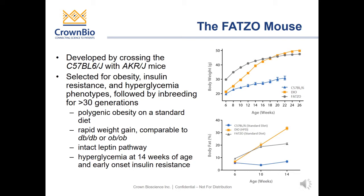At Crown Bio, we feel the FATSO mouse closely mirrors the human metabolic syndrome with spontaneous development of obesity, dyslipidemia, and insulin resistance. Shown in the upper right-hand panel is a body weight graph comparing our FATSO mouse to a DIO mouse to a standard C57 Black 6 mouse. You can see the rapid weight gain over time as compared to the DIO on a high-fat diet. Similarly, along with this rapid weight gain, we see a propensity for greater body fat compared to the C57 Black 6 standard diet, yet they are not as obese as the DIO mice become.